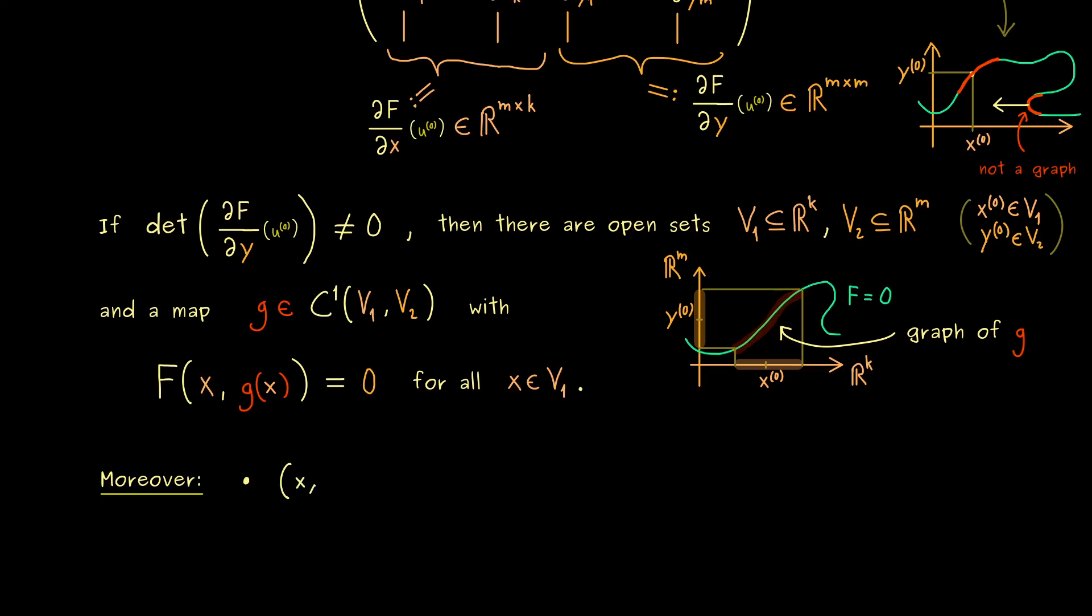If we take two points x and y, x from V_1 and y from V_2, such that they lie on the generalized contour line, which simply means F(x,y) is equal to zero, then we already have that y is equal to g(x).